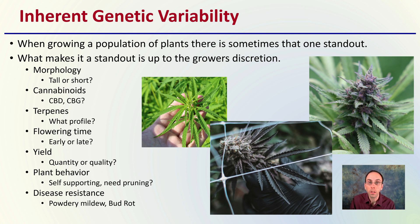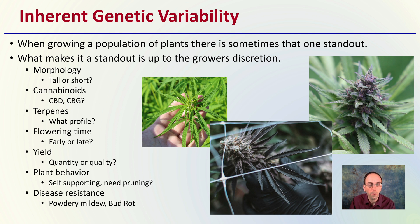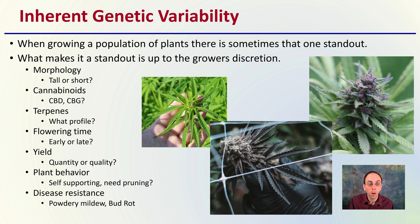Standouts could be the morphology — is it a tall or short plant? Does it produce a lot of CBD or CBG for cannabinoids? What type of terpene profile does it have? These are things to consider, as well as the time that it flowers, whether it's an early or late flower, how much it yields, the quality it produces, how much pruning it needs, and whether it's resistant to diseases. These are just some topics we'll be covering in this video.